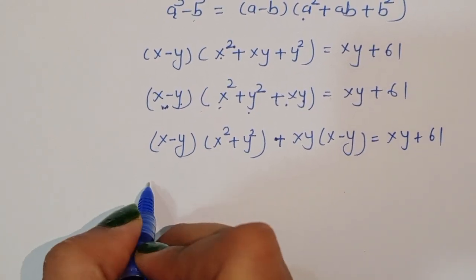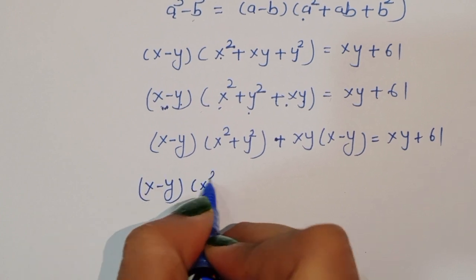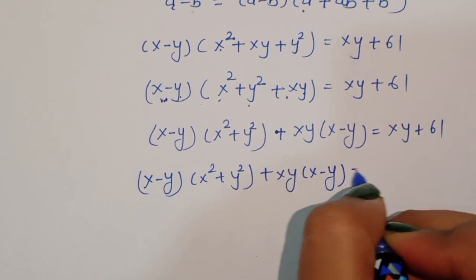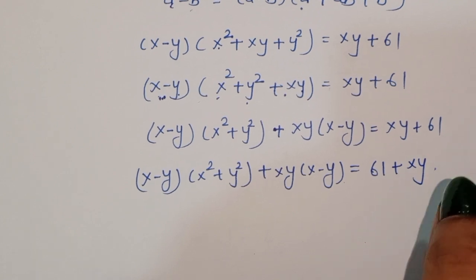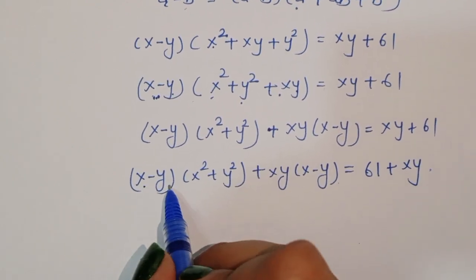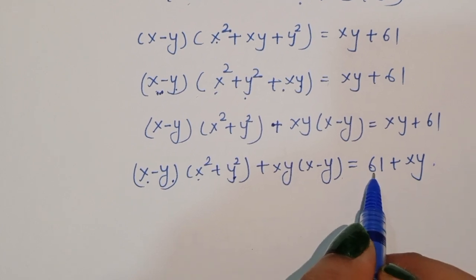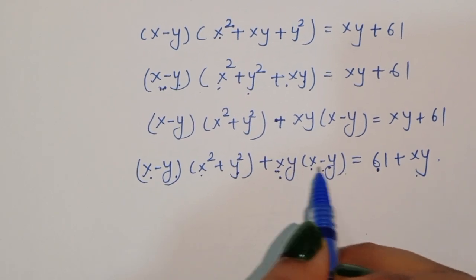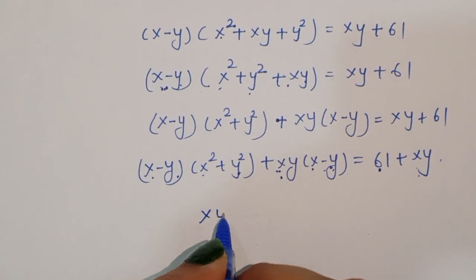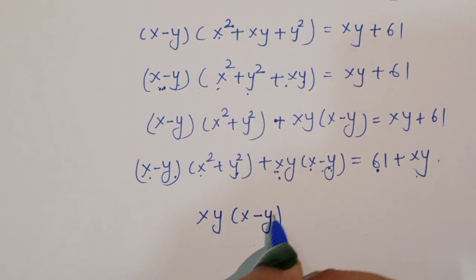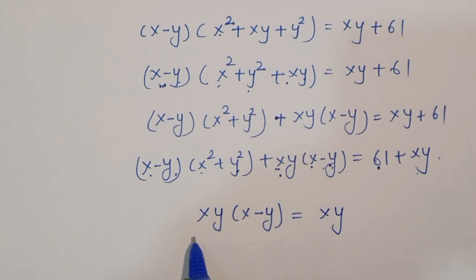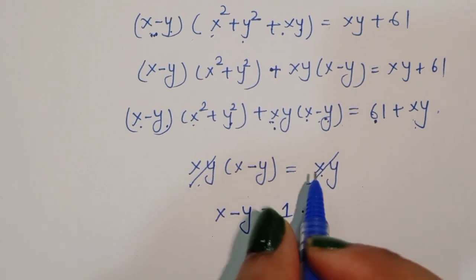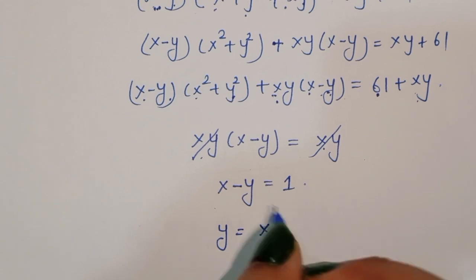Comparing terms: xy·(x - y) = xy, so we can cancel xy from both sides, giving us x - y = 1. Therefore y = x - 1. This is equation number 1.